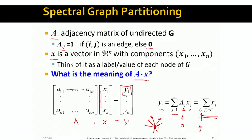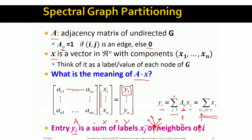This is the y_i and the j is the node j that points to y. So now basically what this means is what we have just learned is that basically the entry y_i is simply a sum of labels x_j of all the neighbors of y.